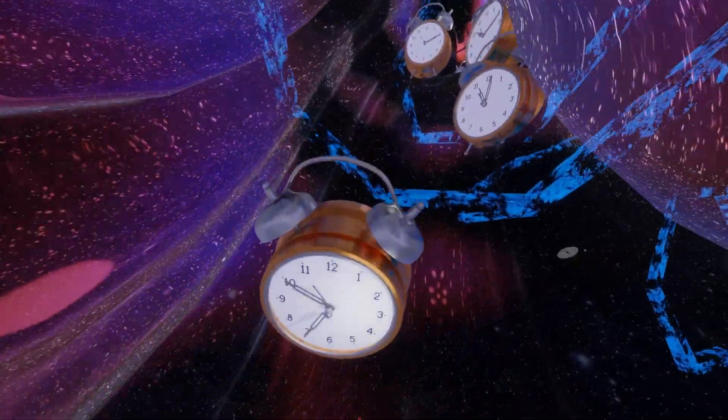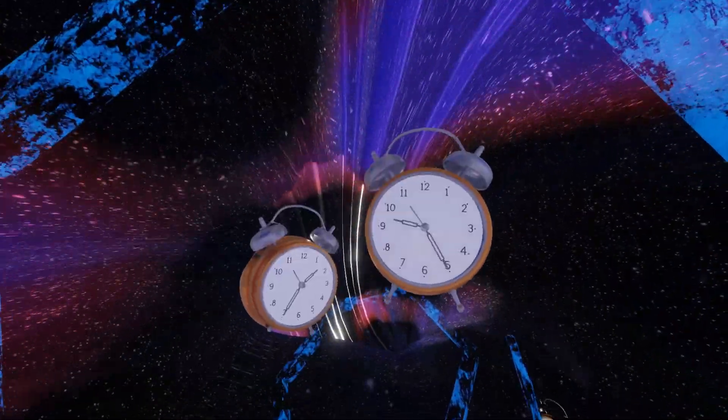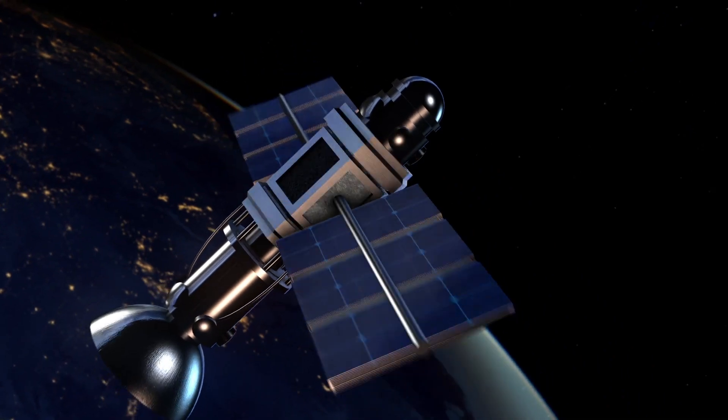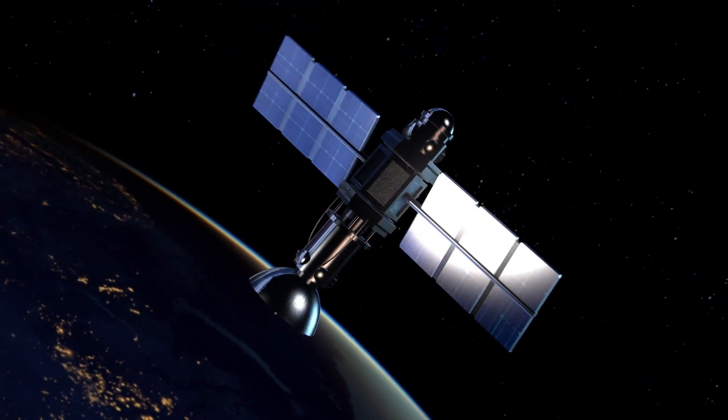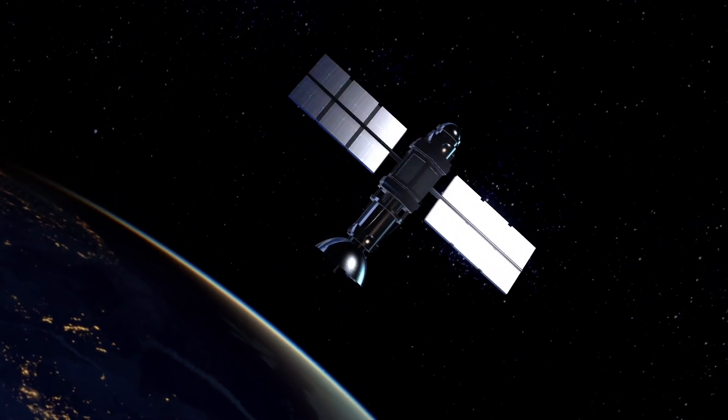Another fascinating consequence of general relativity is the idea of time dilation. Time dilation refers to the fact that time appears to move slower in regions of spacetime with stronger gravity. This effect has been observed experimentally and is a crucial factor in modern GPS technology, where satellite clocks have to be adjusted to account for the time dilation caused by the Earth's gravity.